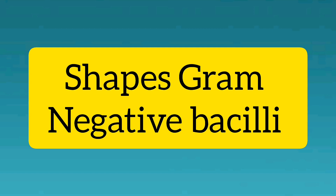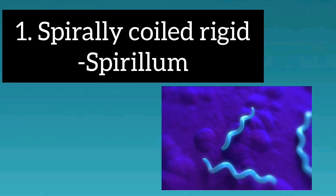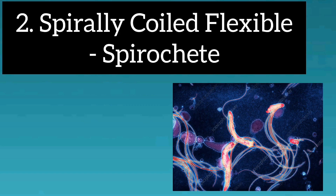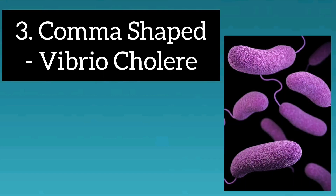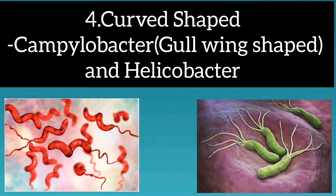Shapes of Gram negative bacilli. Spirillum looks like spirally coiled and rigid. Spirochete looks like spirally coiled and flexible. Vibrio cholerae looks like comma shaped — it is a very important one. Campylobacter and Helicobacter look like curved shaped.